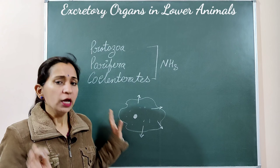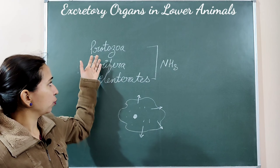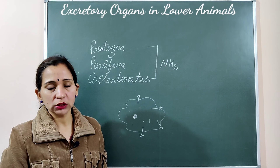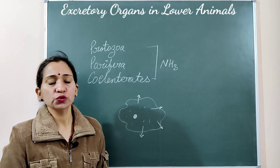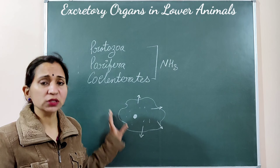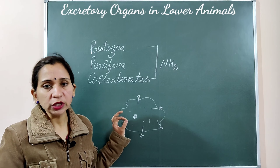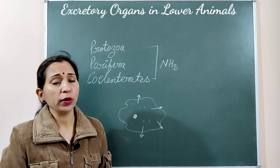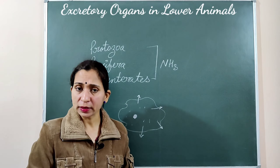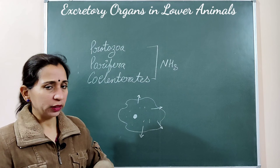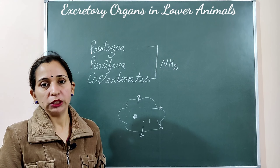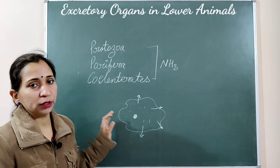There is no specific excretory organ in Protozoa, Porifera, and Coelenterata. But if these organisms are kept in freshwater conditions, a specific structure is formed which is known as the contractile vacuole. In general marine conditions they do excretion by simple diffusion through their body surfaces or by using their canal system. But if they are in freshwater, they form a structure known as the contractile vacuole, which is also used for the maintenance of osmoregulation. So the contractile vacuole serves both excretion and osmoregulation.